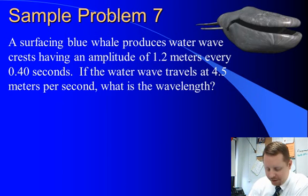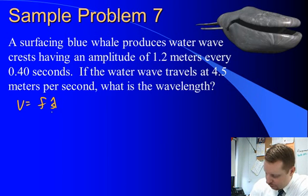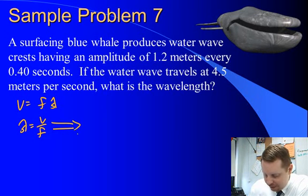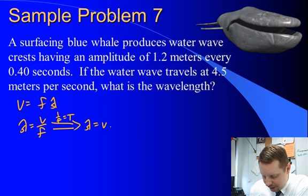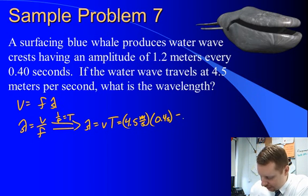We're looking for wavelength. Velocity equals frequency times wavelength, or wavelength equals velocity over frequency, but again, we're given period at 0.4 seconds. So if you remember, 1 over frequency equals period, we can say wavelength equals velocity times period, or 4.5 meters per second times our period of 0.4 seconds, gives us a wavelength of 1.8 meters.